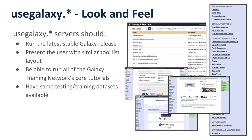One of the other things we really wanted to concentrate on was the look and feel of how the usegalaxy.star service should look. We all decided we would try to run the latest stable Galaxy release at all times — as soon as the new Galaxy release is out, we would make plans to upgrade in the minimum possible time. The idea is that we'll present the user with a similar tool list in the same layout, so tools are found in the same place on each of these servers. We will be able to run all of the Galaxy Training Network's core tutorials on all of these servers. If you're in Australia and you want to run a Galaxy tutorial, you can just log in to usegalaxy.org.au and be guaranteed it's going to work, with the same testing and training datasets, reference data and tools available.